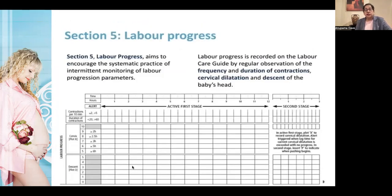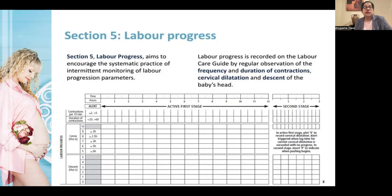Section five is the cervicogram — the progress of labor — which records the rate and duration of contractions and cervical dilatation. The time limits are: at 5 cm, more than 6 hours is an alert; at 6 cm, more than 5 hours; at 7 cm, more than 3 hours; at 8 cm, more than 2.5 hours; at 9 cm, more than 2 hours. The duration of labor has increased because it depends on individual characteristics. Descent is plotted alongside dilatation — cervical dilatation as a cross and descent as a zero.